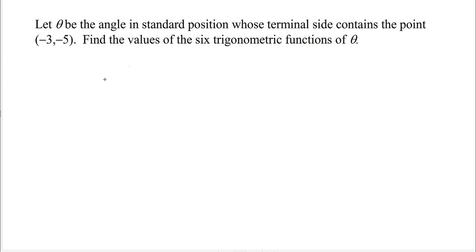First of all we want to draw this angle, so we're going to plot the point that's on its terminal side. We need -3 and -1, 2, 3, 4, 5. So the point (-3, -5) is on the terminal side. Here's our terminal side and here's our angle θ.